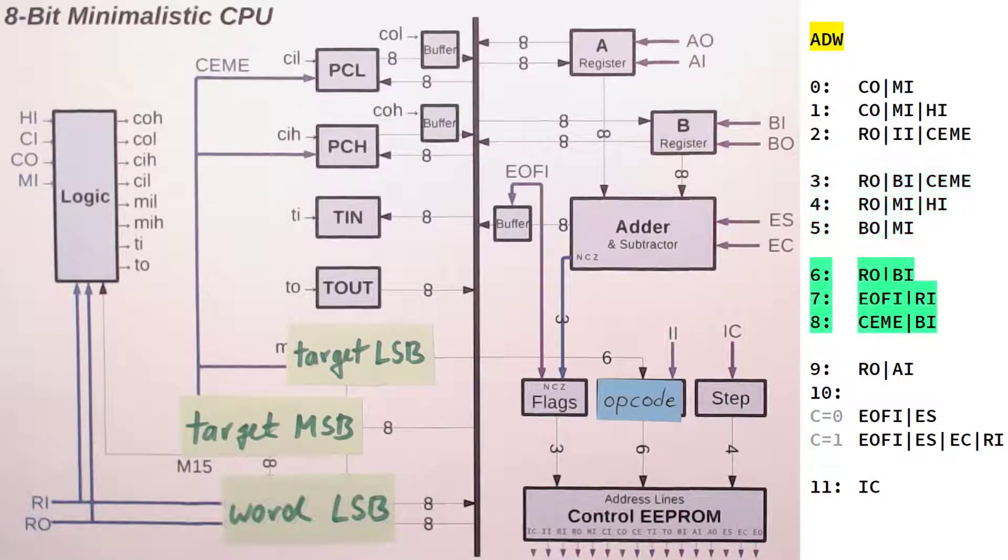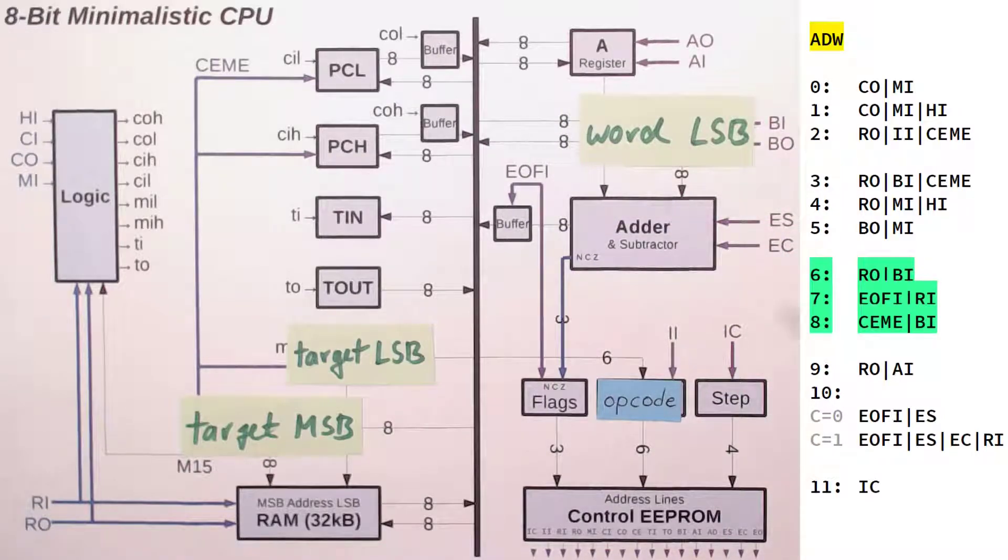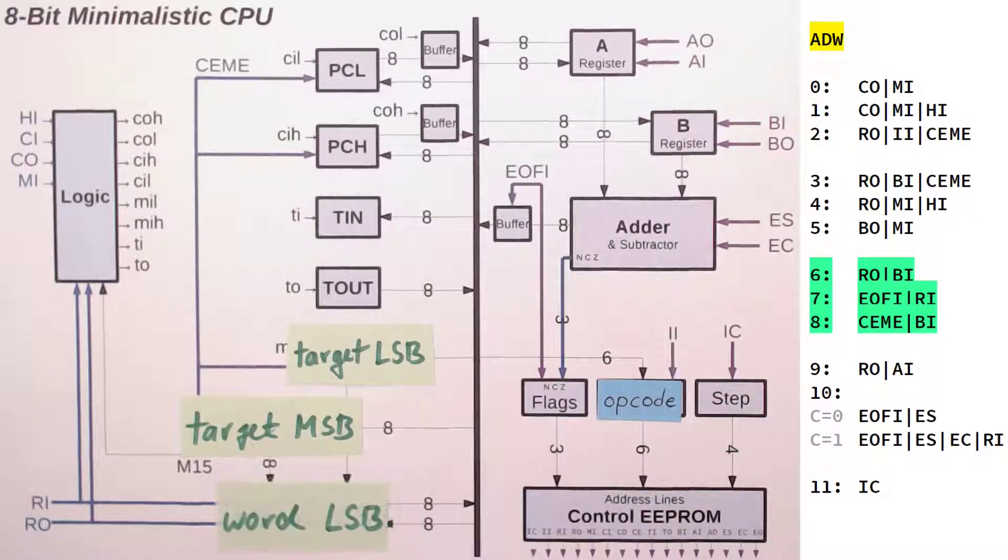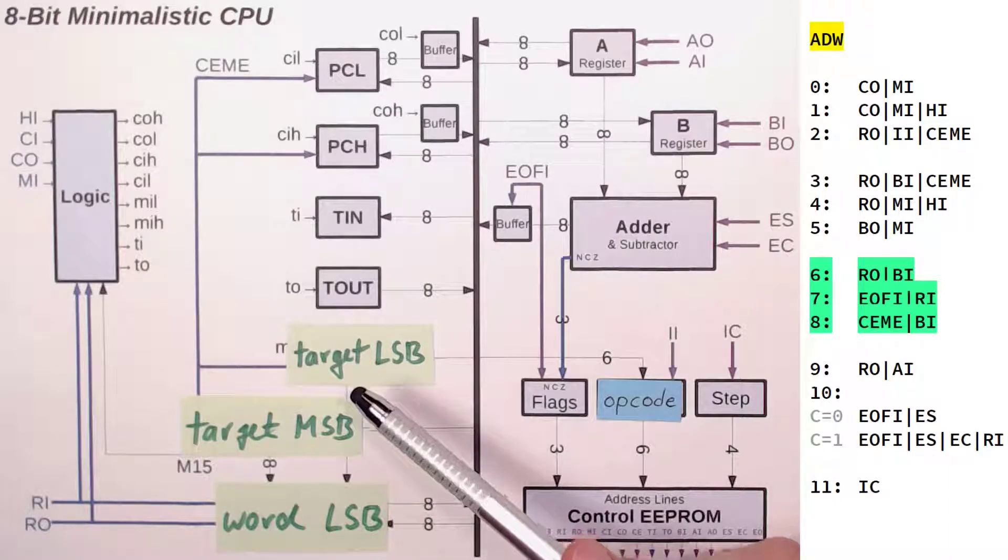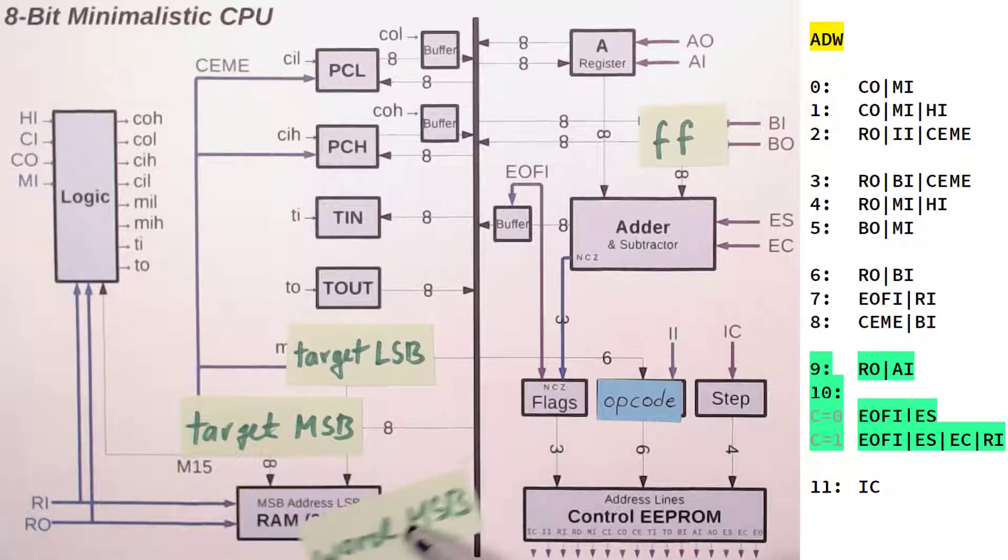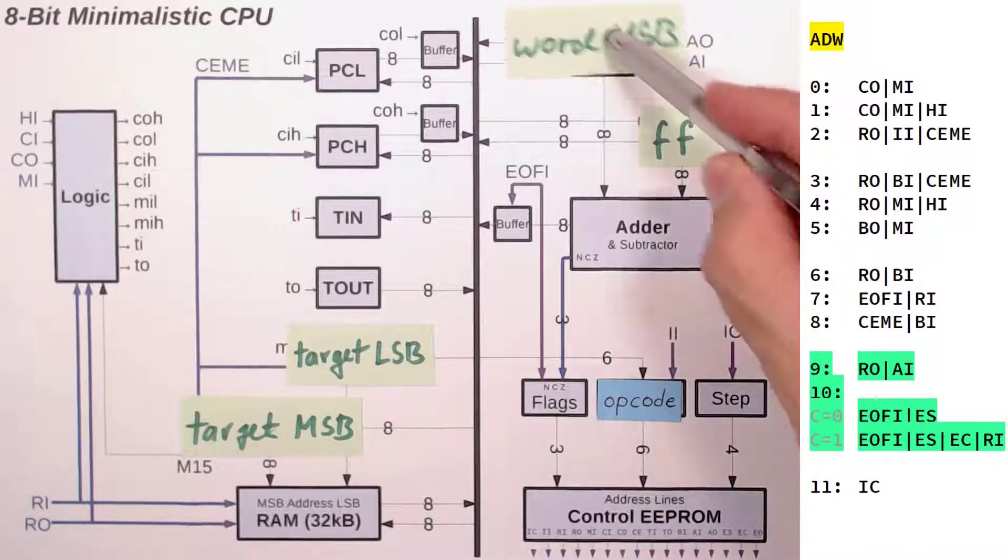The steps 6 and 7 move this value up into the B register, add it to A and store the result back into memory. Note that now the carry flag contains the overflow information. Then on step 8, we increment our MAR to expose the word MSB and also load the value minus 1 into the B register. Next, we move this word MSB into A. Now we are ready to do nothing if C equals 0 or if C equals 1, we add 1 and write back the result into RAM.